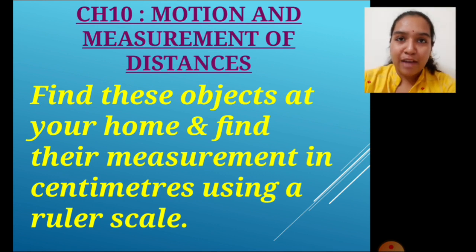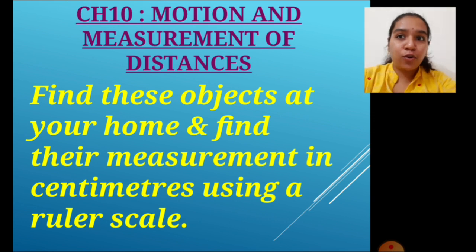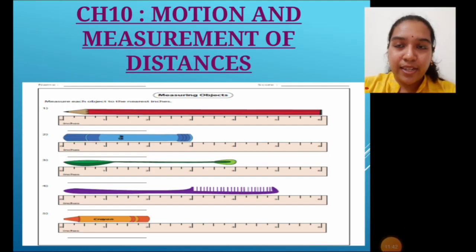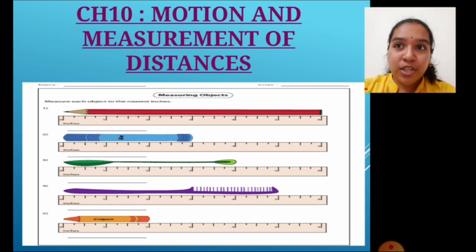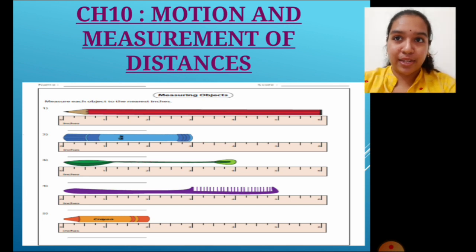In today's activity, you have to find certain objects at your home, measure them with your ruler scale, and note down their length in centimeters. Here are the objects - you can see and identify them. Find them at your house and in your notebook, name these objects and write down their measurement in centimeters. That is the activity for today. We will continue this chapter in your next class.